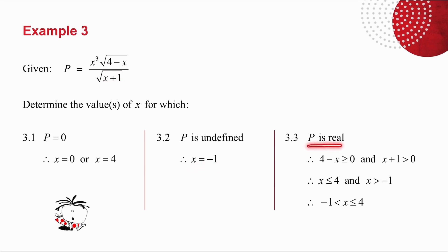3.3, I want p to be real. In other words, I cannot have the square root of any negatives. So 4 minus x must be greater than or equal to 0. So x must be less than or equal to 4. And watch that inequality sign. x plus 1 also can't be negative, and it cannot be 0, because I cannot divide by 0. So x plus 1 must be greater than 0, which means that x must be greater than minus 1. These two must happen at the same time, which means x must be greater than minus 1 and less than or equal to 4.